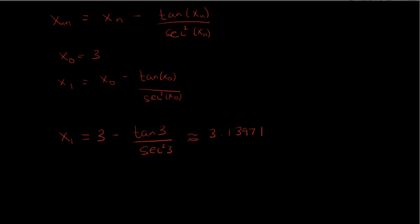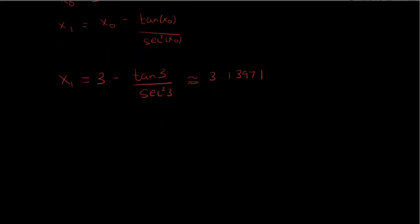So let's try this another time. x₂ now is x₁ minus tangent of x₁ over secant squared x₁. x₁ is 3.13971 if you plug that in we end up getting 3.14159. Okay so that's pretty good. Okay so if we did this a couple more steps we'll get an even better approximation of pi but for our purposes this is more than enough.